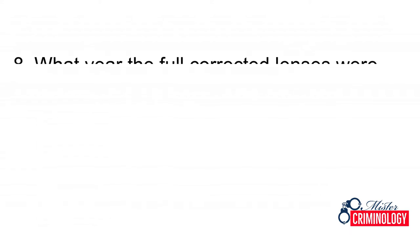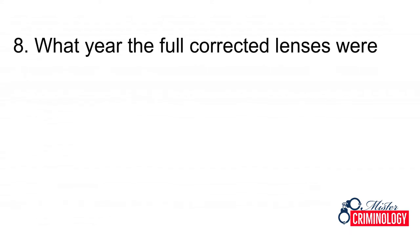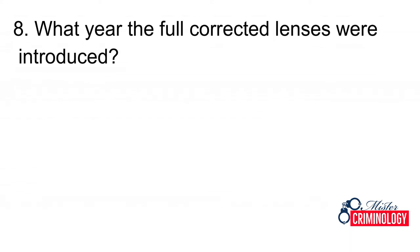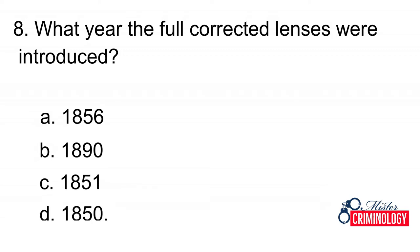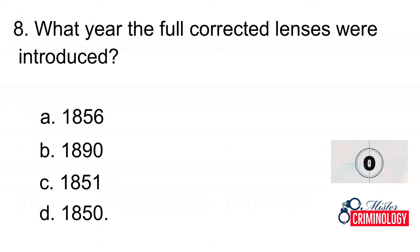Question 8: What year did Kodak introduce a camera? A. 1856, B. 1890, C. 1851, D. 1850. Answer: B. 1890.